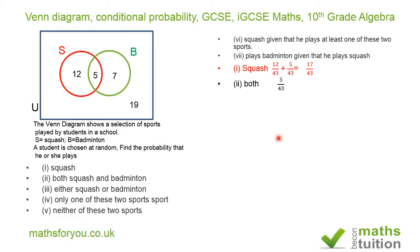For question two — both squash and badminton — the word 'both' implies intersection. That's just the 5 students in the overlapping region. With a sample space of 43, the probability is 5/43.